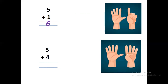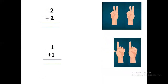On one hand you have to open five fingers, and on the other hand you have to open four fingers. So let's count all together: one, two, three, four, five, six, seven, eight, nine. Great! Next is two plus two.